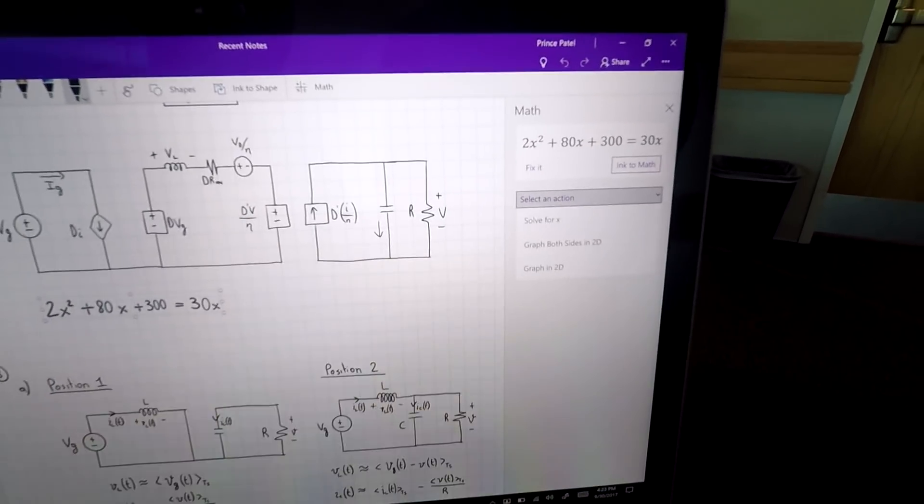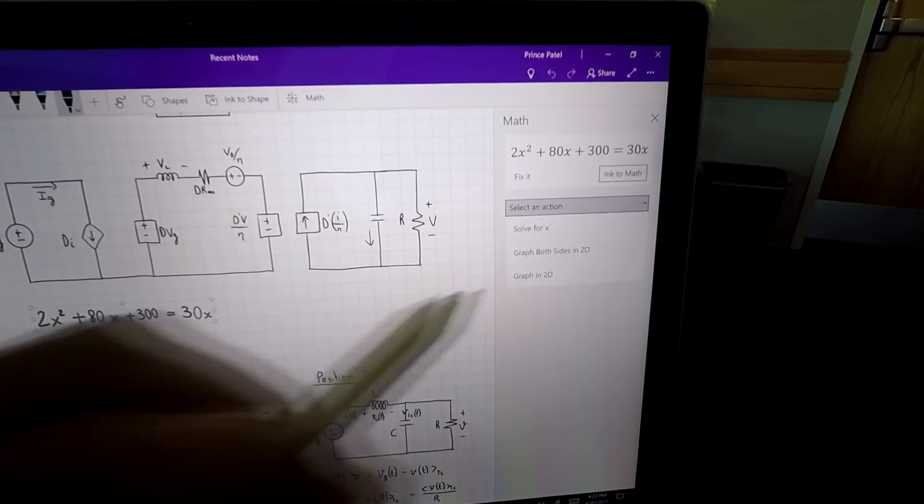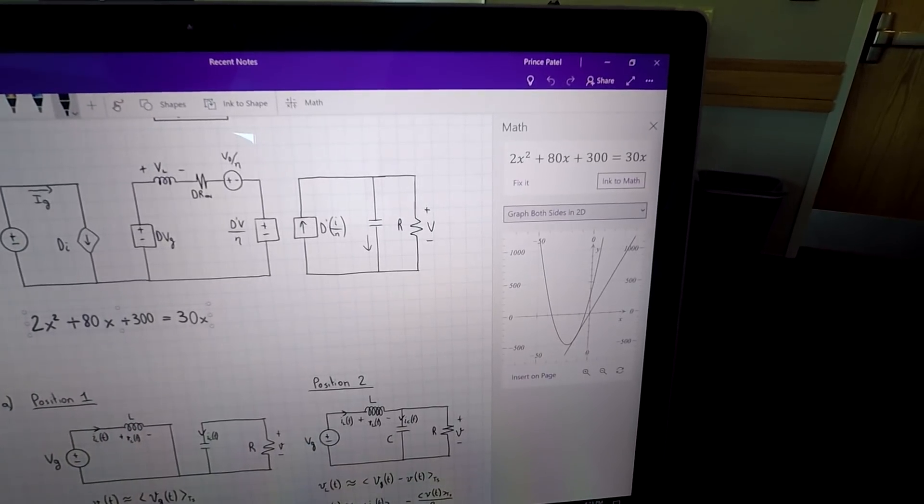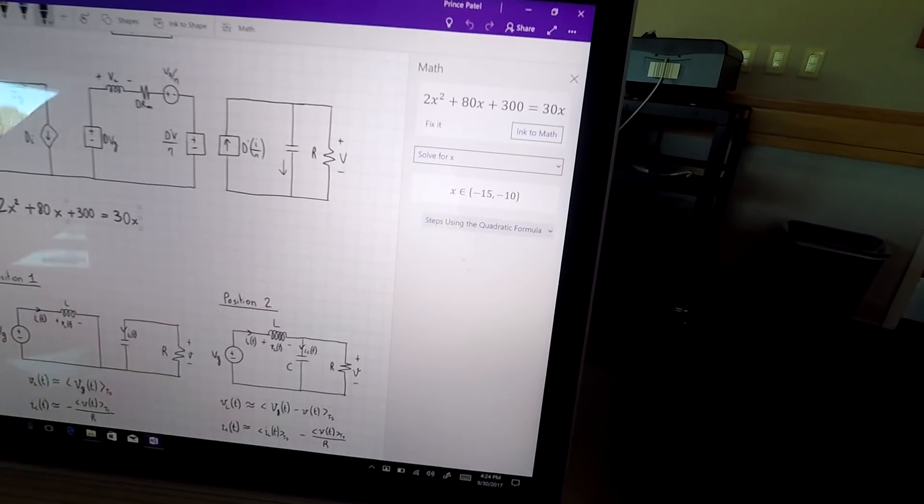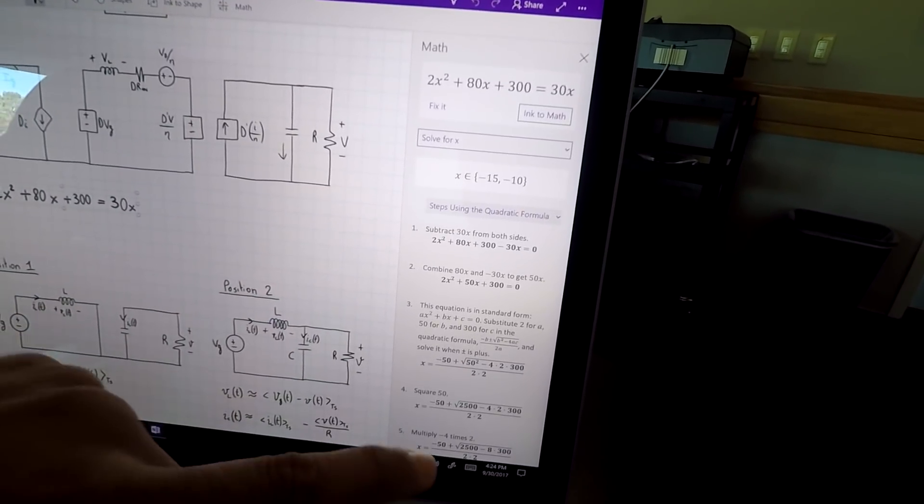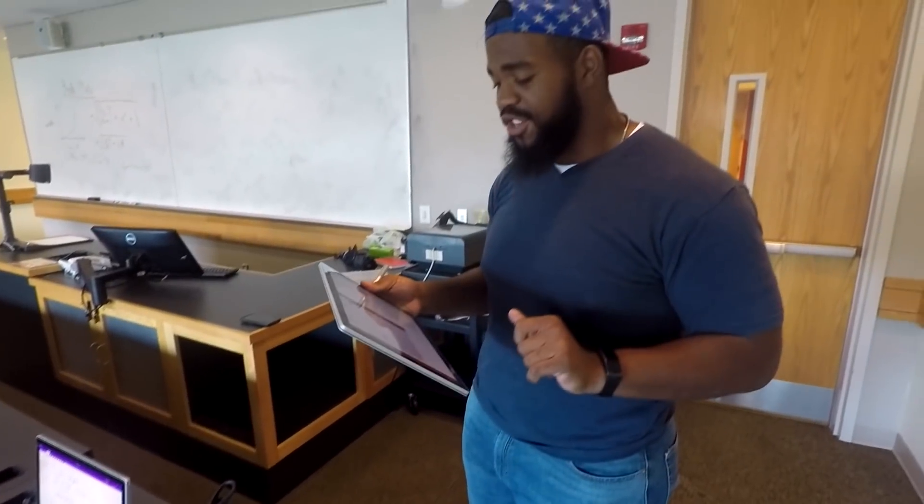What? I can take an action. There's more? Yeah. To graph this in 2D. Now I have a graph for my equation. What? And if I want to know how that answer came about, OneNote shows me the steps. There's actually more I want to show you.